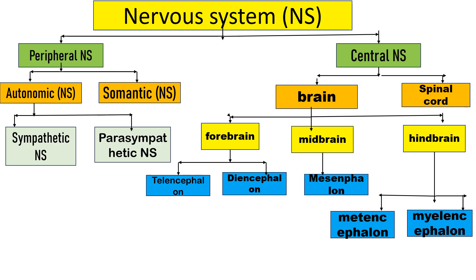This is a flowchart about the Nervous System. The Nervous System is divided into the Peripheral Nervous System and the Central Nervous System. In this session, we are going to discuss the Peripheral Nervous System, which is further divided into the Autonomic Nervous System and the Somatic Nervous System. The Autonomic Nervous System divides into Sympathetic and Parasympathetic. The Central Nervous System divides into Brain and Spinal Cord.